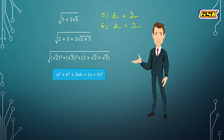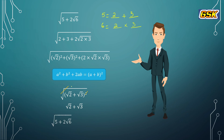In place of a we have root 2, and in place of b we have root 3. So it can be written as root of root 2 plus root 3 whole square. The square root cancels, giving the final answer: root 2 plus root 3. Therefore, the square root of 5 plus 2 root 6 equals root 2 plus root 3.